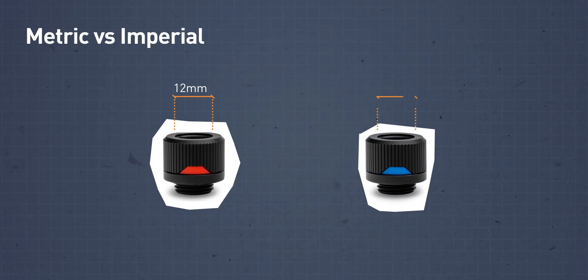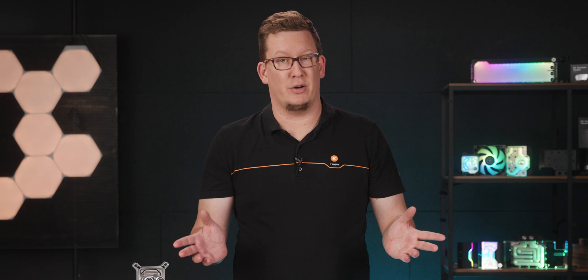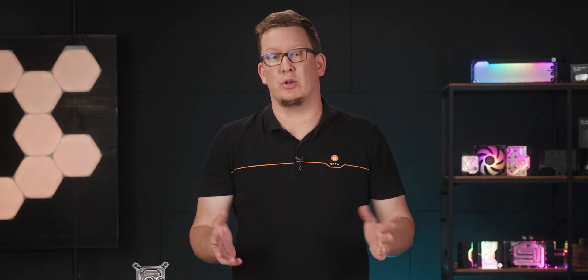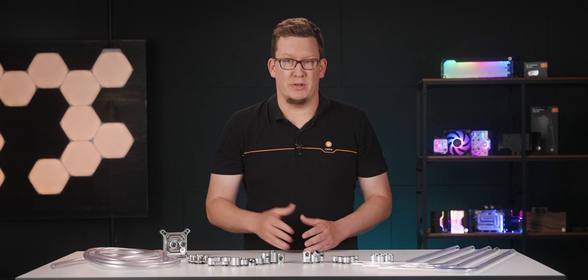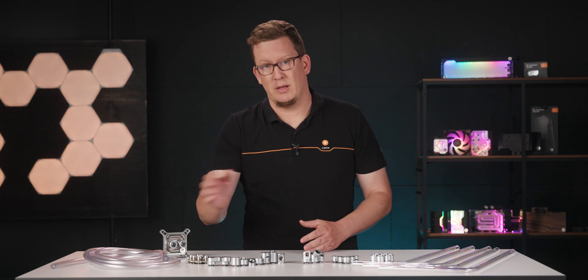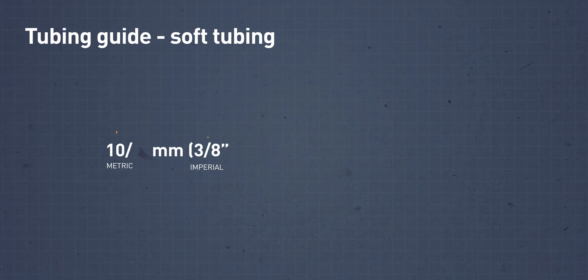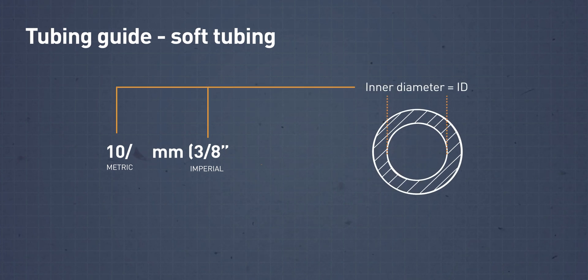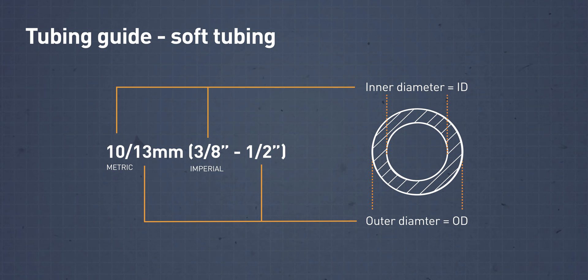Dimensions are provided in metric or imperial units, although nowadays the entire market is leaning more towards metric. For example, the most common soft tubing is marked with two numbers. The first number reveals the inner diameter or ID, and the second the outer diameter or OD.